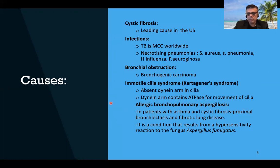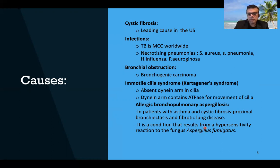Allergic bronchopulmonary aspergillosis is a condition seen in patients with bronchial asthma and cystic fibrosis, leading to bronchiectasis and fibrotic lung disease. It results from hypersensitivity to the fungus Aspergillus fumigatus. A fungal ball of Aspergillus develops, and hypersensitivity to it causes inflammation, leading to bronchial asthma, cystic fibrosis, and subsequently bronchiectasis and fibrotic lung disease.